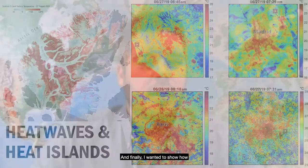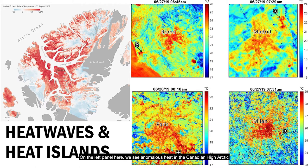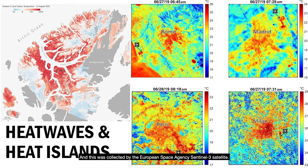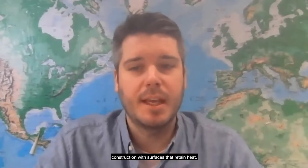Finally, I wanted to show how heat waves and heat islands can also be quantified using remote sensing. On the left panel, we see anomalous heat in the Canadian high Arctic during the summer heat wave of 2020, collected by the European Space Agency's Sentinel-3 satellite. On the right, it brings things home to the human impact, showing urban heat islands from NASA's EcoStress product — airports and city centers are hotter than surrounding regions because of their construction with surfaces that retain heat.